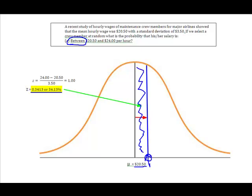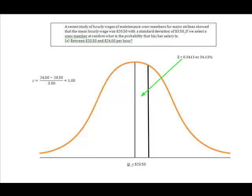So let's see what happens when we go to more than. The next piece of information it asks us for is what is the probability that it's more than $24.00? Well, we just determined that the area between the mean of $20.50 and $24.00 was 34.13%. So we know that this area in here is 0.3413. So if I now want to know what is the probability that they make more than $24.00 an hour, then what I'm really looking for is the unknown value of this area of the curve right here.